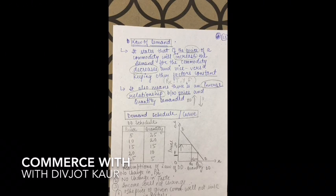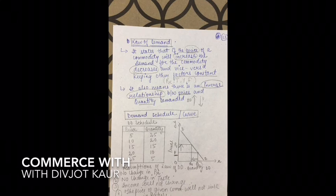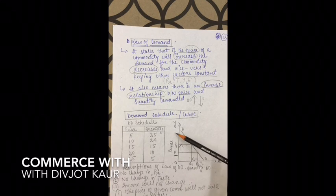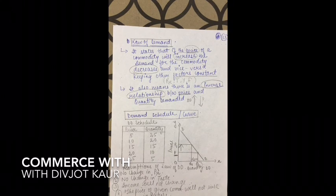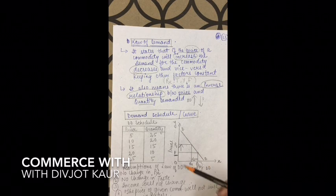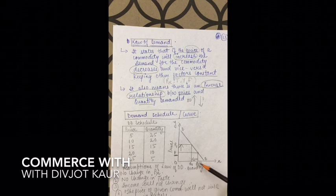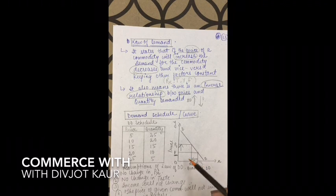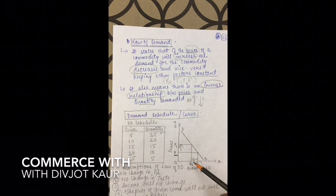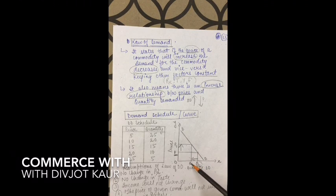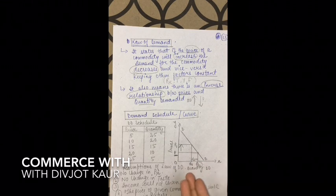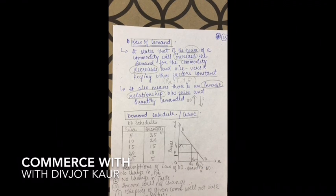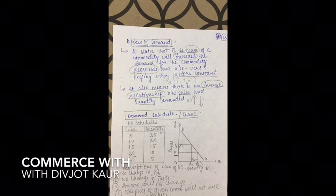You can also prove law of demand with a hypothetical demand curve — a curve where you assume values yourself without writing specific numbers. In the hypothetical demand curve: when price was P and quantity demanded was Q, if price increases from P to P1, then quantity demanded decreases from Q to Q1. By joining such dots you get the downward sloping demand curve, which clearly shows the inverse relationship between price and quantity demanded.